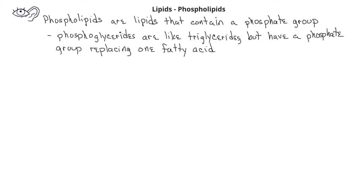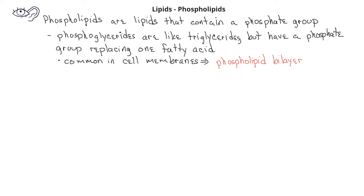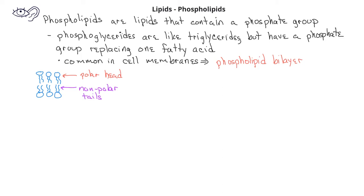Phospholipids are useful because they form membranes for cells by creating what's known as a phospholipid bilayer. In these bilayers, we have two layers of phospholipids with their polar heads on the surfaces of the bilayers, while their nonpolar hydrocarbon tails are toward the inside of the cell membrane. The more saturated the fatty acid tails are, the more rigid the membrane will be due to the strong dispersion forces of the nonpolar fatty acid tails.